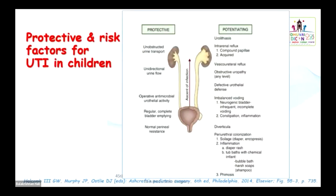There are certain protective factors in our body to prevent UTI: unobstructed urinary transport from the kidney to the bladder, unidirectional urine flow, operative antimicrobial urothelial activity, regular and complete bladder emptying, and normal perineal resistance. Potential factors promoting urinary infection include renal stone disease, intrarenal reflux with compound papillae or acquired causes, obstructive uropathy at the PUJ level or PUV or stones, defective urothelial defense, imbalanced voiding, neurogenic bladder, acquired dysfunctional voiding, and periurethral colonization.